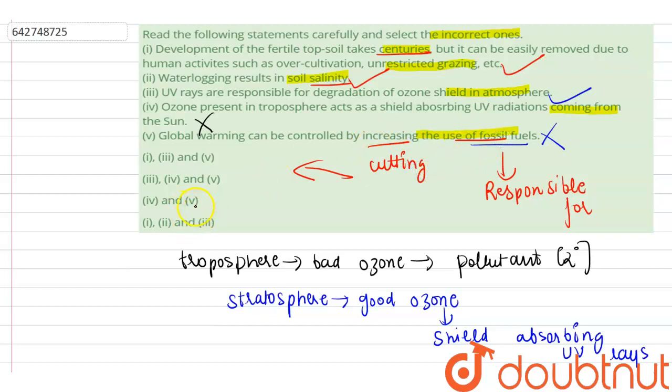So global warming can be controlled by cutting the use of fossil fuels. That is why the correct option here is 4th and 5th. The 4th and 5th statements are incorrect, and the 1st, 2nd, and 3rd statements are correct.